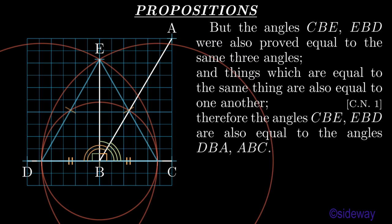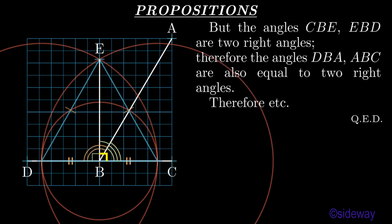But the angles CBE, EBD were also proved equal to the same three angles. And things which are equal to the same thing are also equal to one another, by Book 1 Common Notion 1. Therefore the angles CBE, EBD are also equal to the angles DBA, ABC. But the angles CBE, EBD are two right angles. Therefore the angles DBA, ABC are also equal to two right angles. What was to be shown.